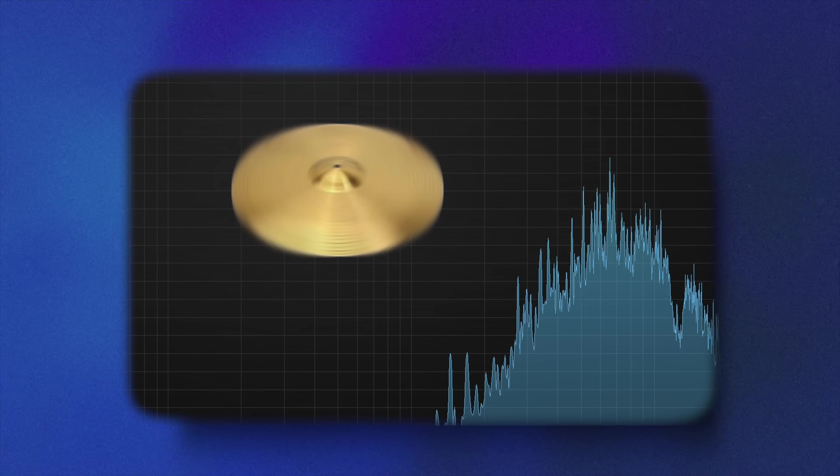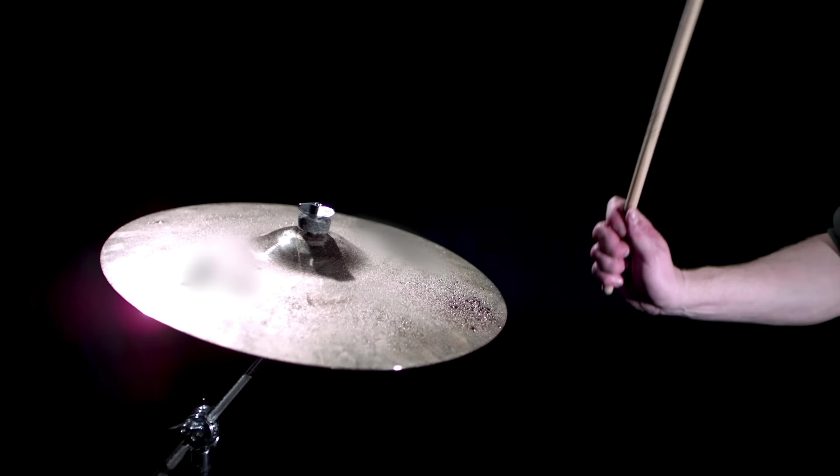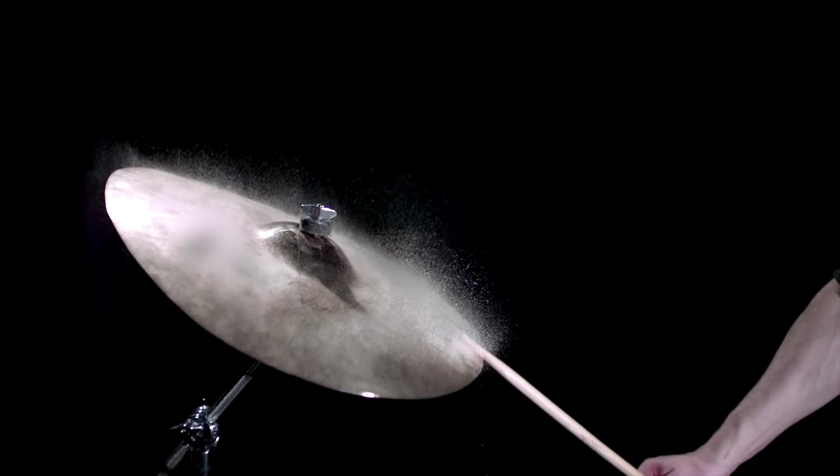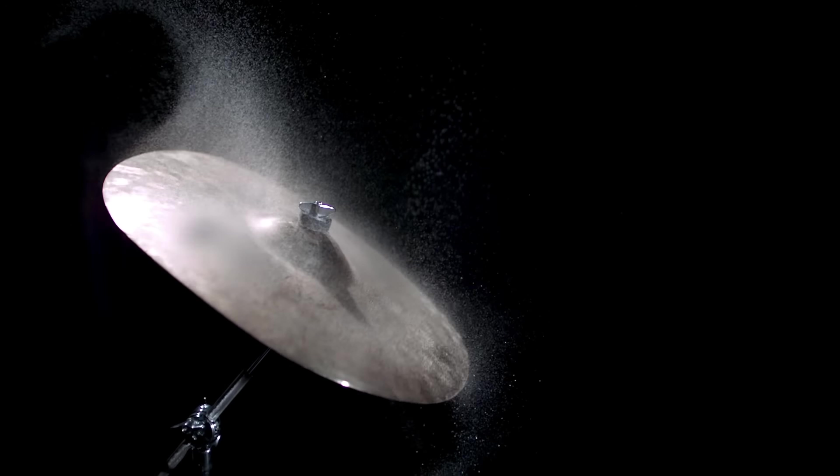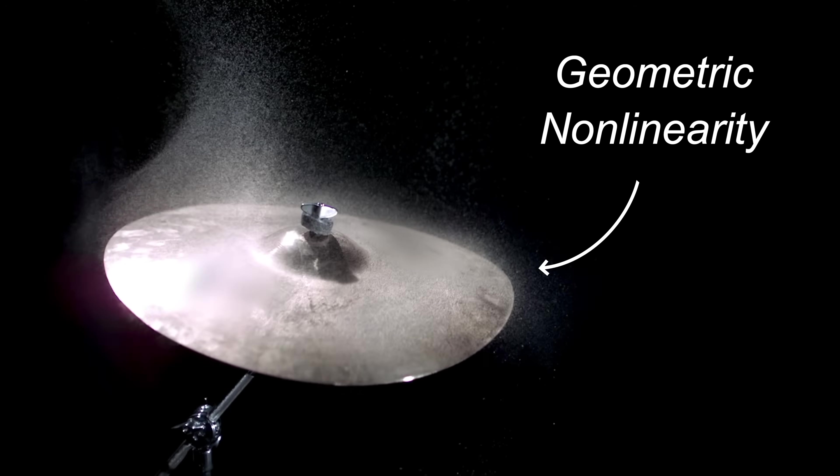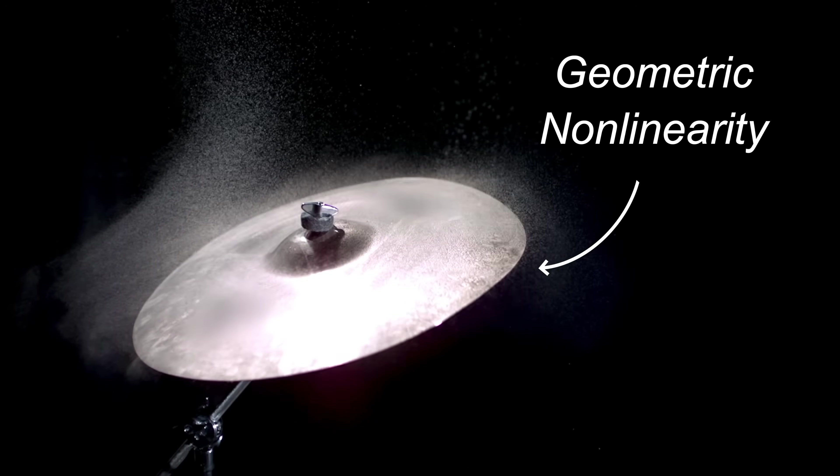But what if a sound is atonal, like cymbals? You don't play an E note on the cymbal. This is because the amplitude of the vibrations in the cymbal are about as large as the thickness of the cymbal, and this gives rise to a different non-linearity called a geometric non-linearity, which causes the sound to not have an obvious pitch.